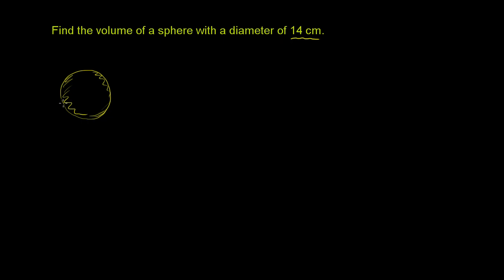They're giving us the diameter. So if we go from one side of the sphere straight through the center of it, we're imagining that we can see through the sphere, and we go straight through the center, that distance right over there is 14 centimeters.